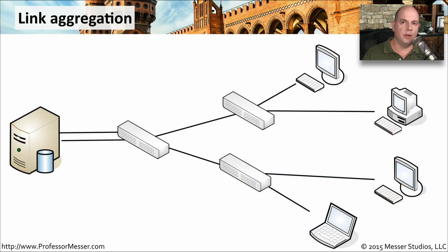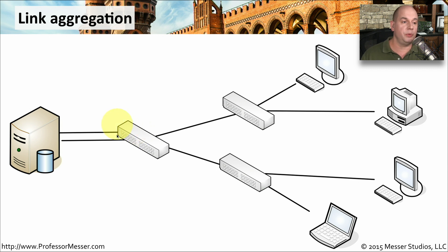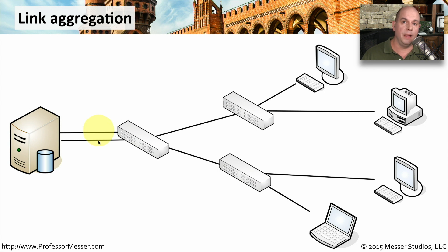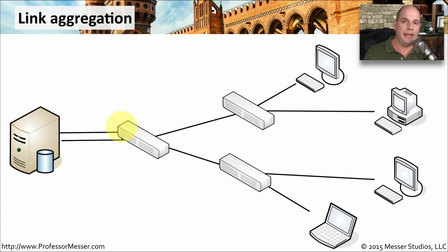One way to provide this fault tolerance is using link aggregation. In this case, we would have a single device with multiple interfaces, and both of those interfaces are connecting to a single switch. We configure this switch to interpret both of those as a link aggregation connection, and then it begins sending traffic across both of them, generally load balancing across them as well. If either one of these interfaces is disabled or a cable is unplugged, this connection will remain up because you have another connection in the link aggregation that's still available. You can have multiple interfaces all combined together as one single link with link aggregation.